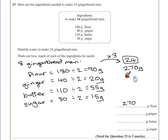So, 20 times 3 would be 60. So that's 60 grams of ginger.